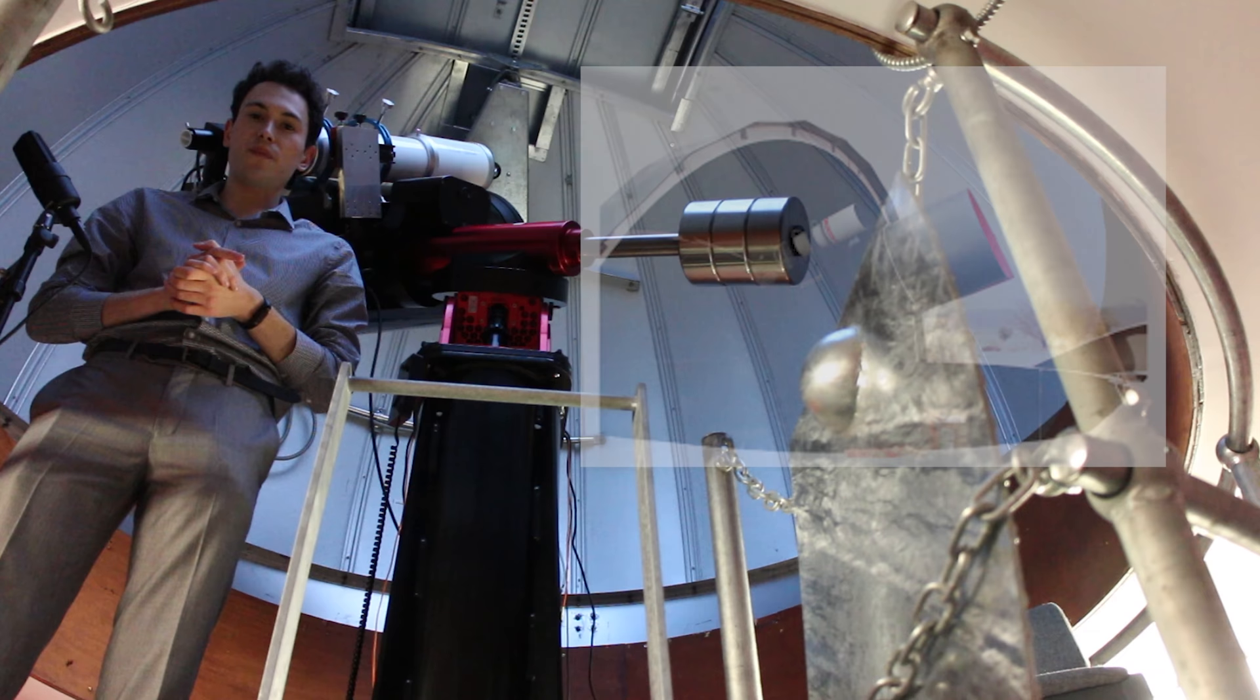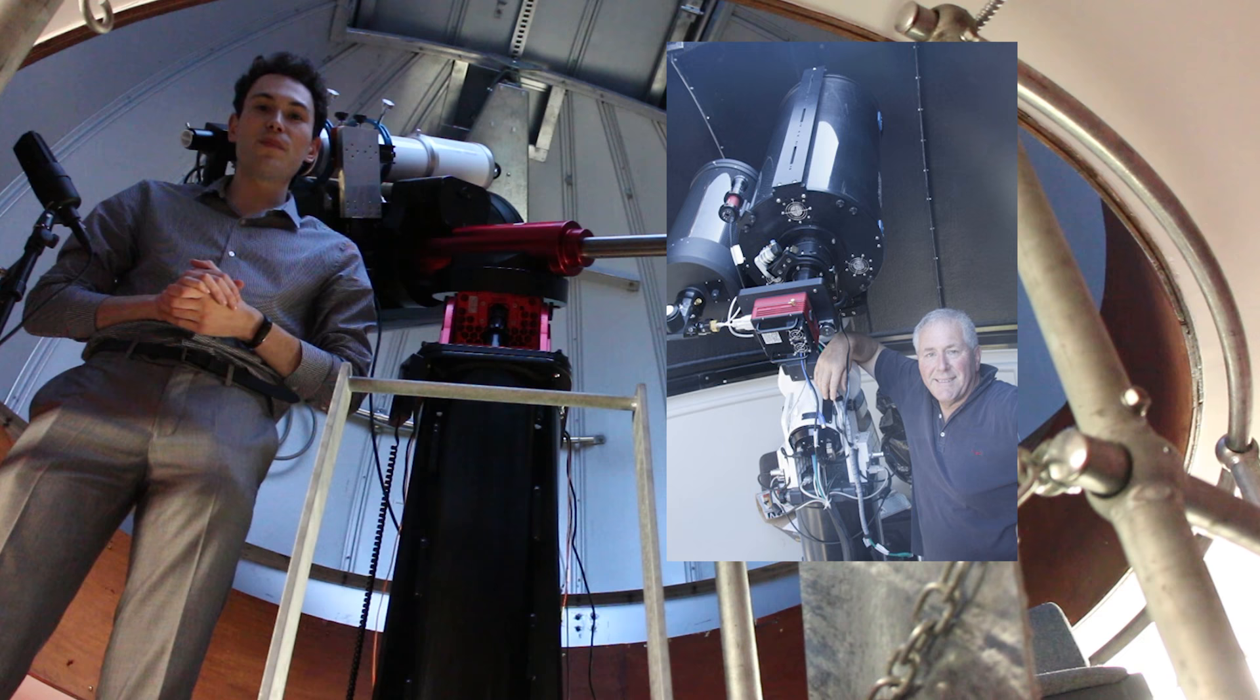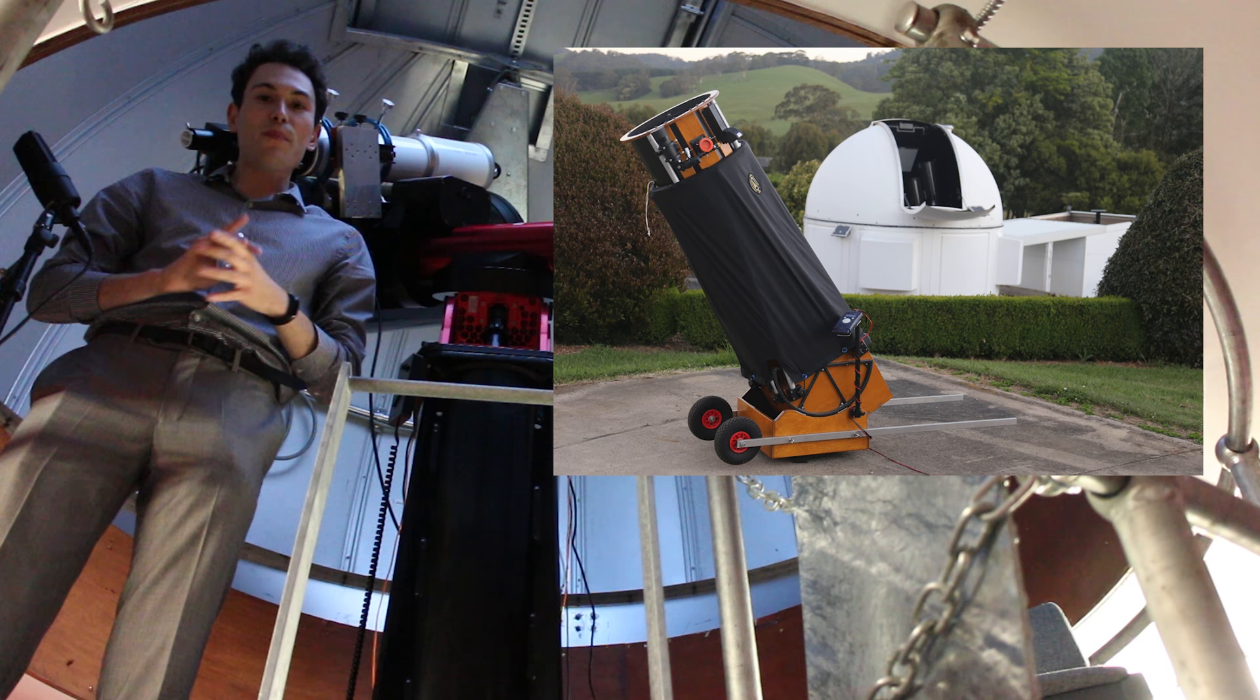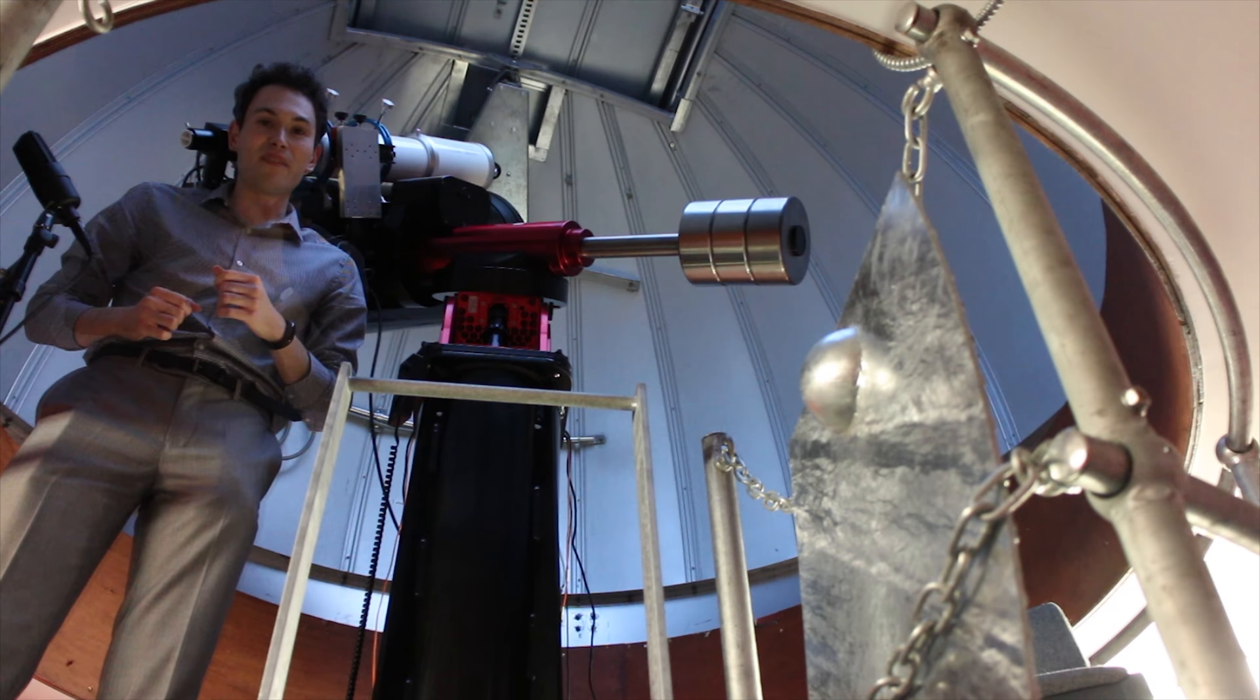Next up we have Peter Nelson and his two observatories in Ellinbank, southern Australia. Peter has a wealth of experience in photometry, having previously been involved in a project that refined the positions of the Galilean satellites by over an order of magnitude. Just like the observers at La Silla, Peter has been battling the clouds. From all of us at the Red Dots team, we wish you the best of luck with the winter weather.